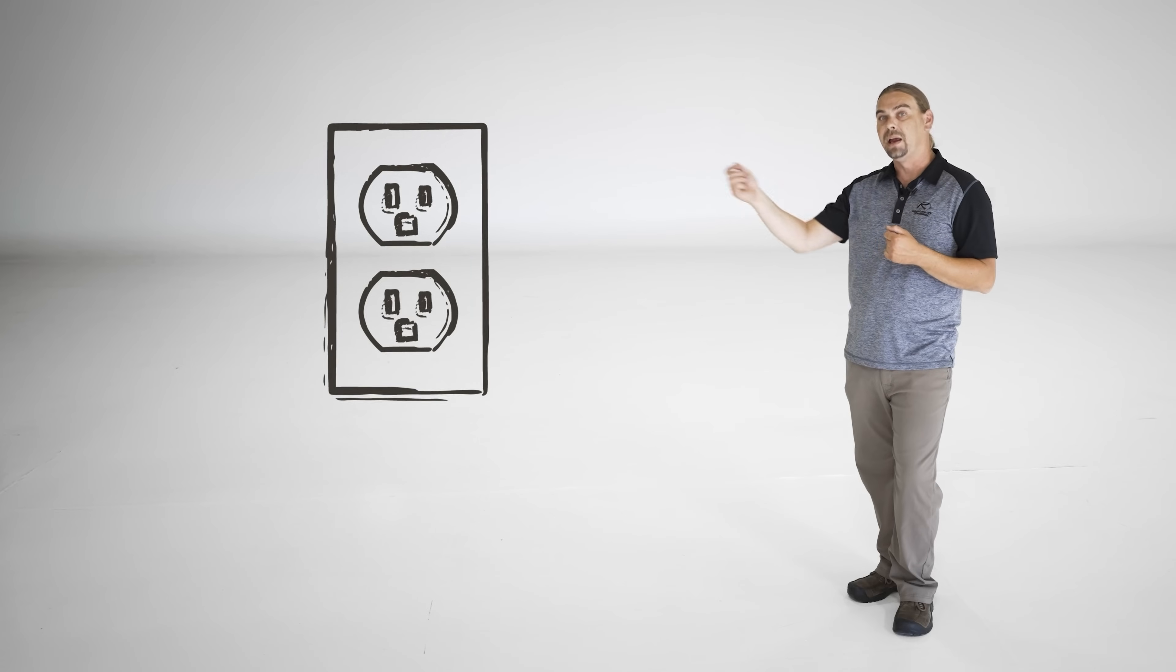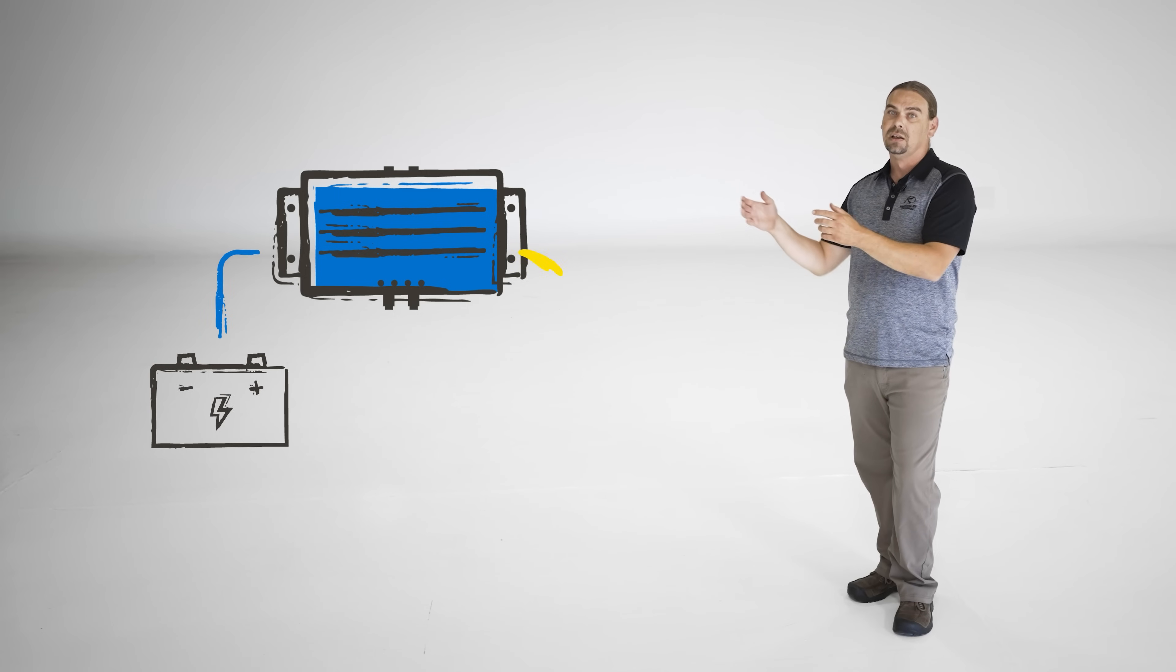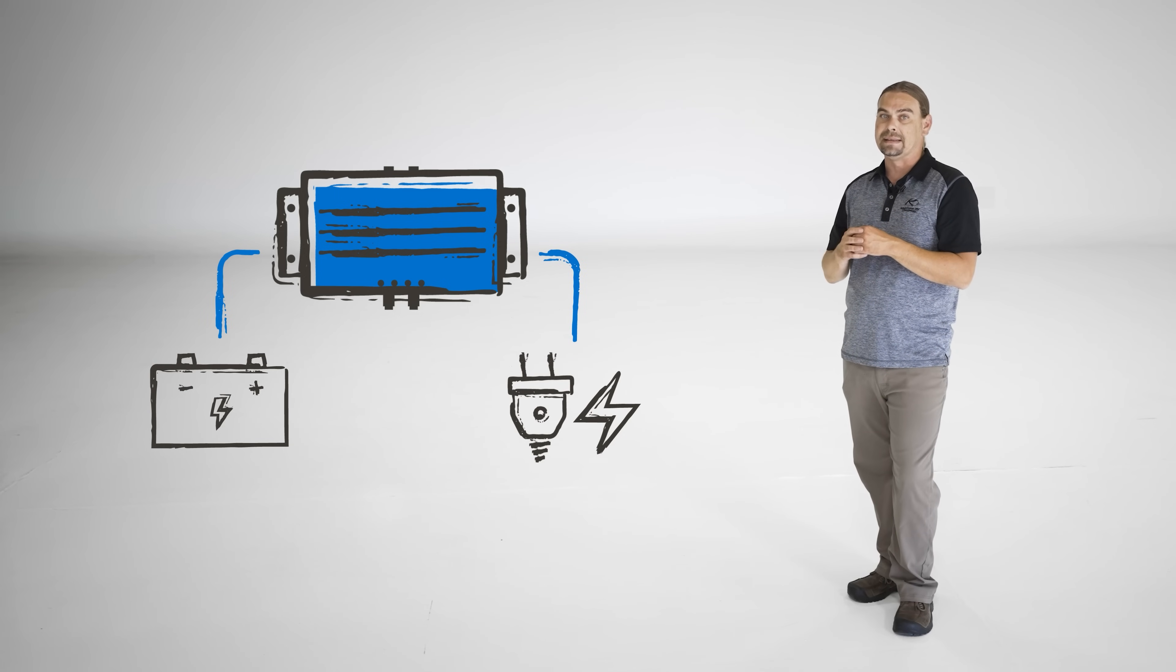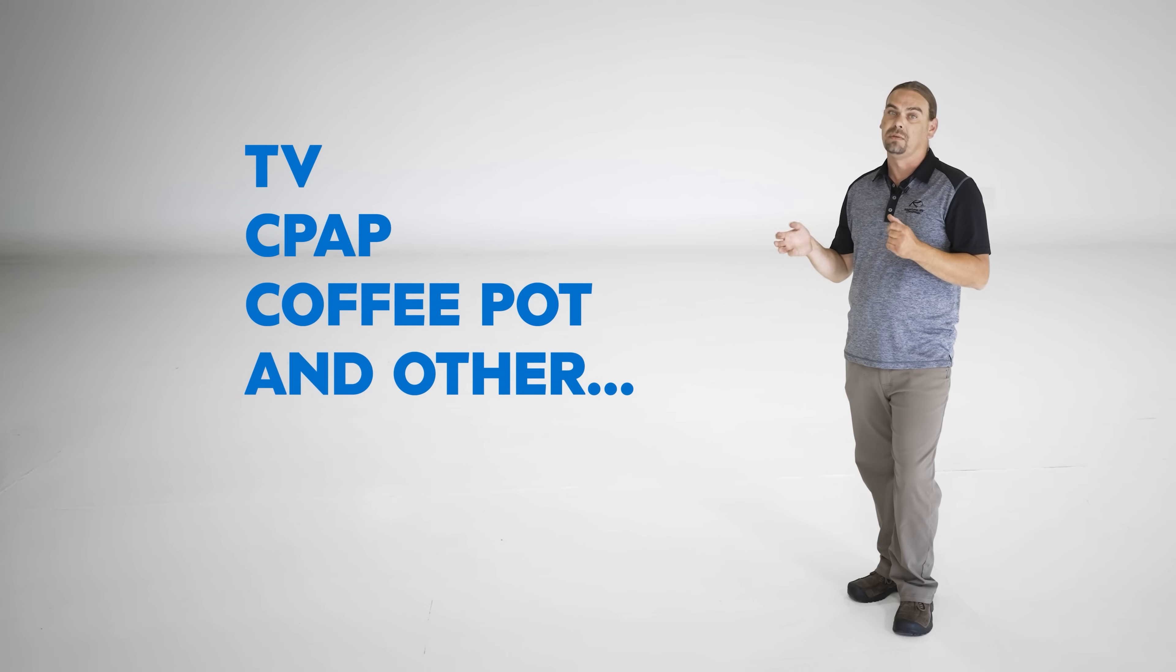If you want to use things that require 110-volt AC power—in other words, plugged into an outlet—you will need an inverter. An inverter will take the energy from your battery and convert it from DC to AC and send that energy to your inverted outlet, so you can plug in and use things like your TV, CPAP, coffee pot, and other 110-volt appliances.